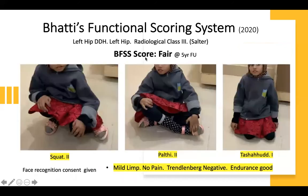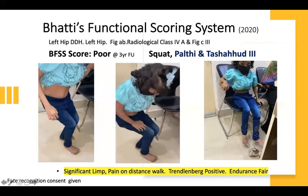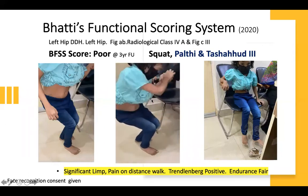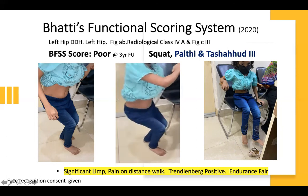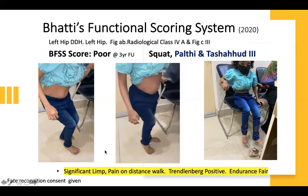A patient with five-year follow-up has a fair score with squat 2, palti 2, and tashud 1. She has a mild limp, no pain, and no Trendelenburg. A patient with a poor score is unable to do the squat, unable to do the palti, and unable to do the tashud — scoring type 3 in all three positions.